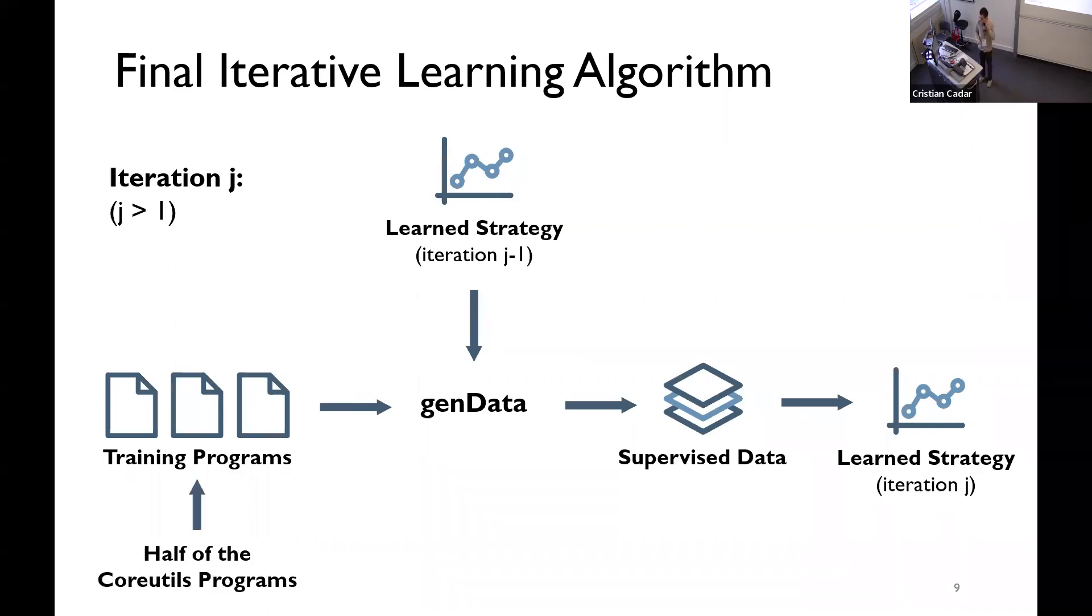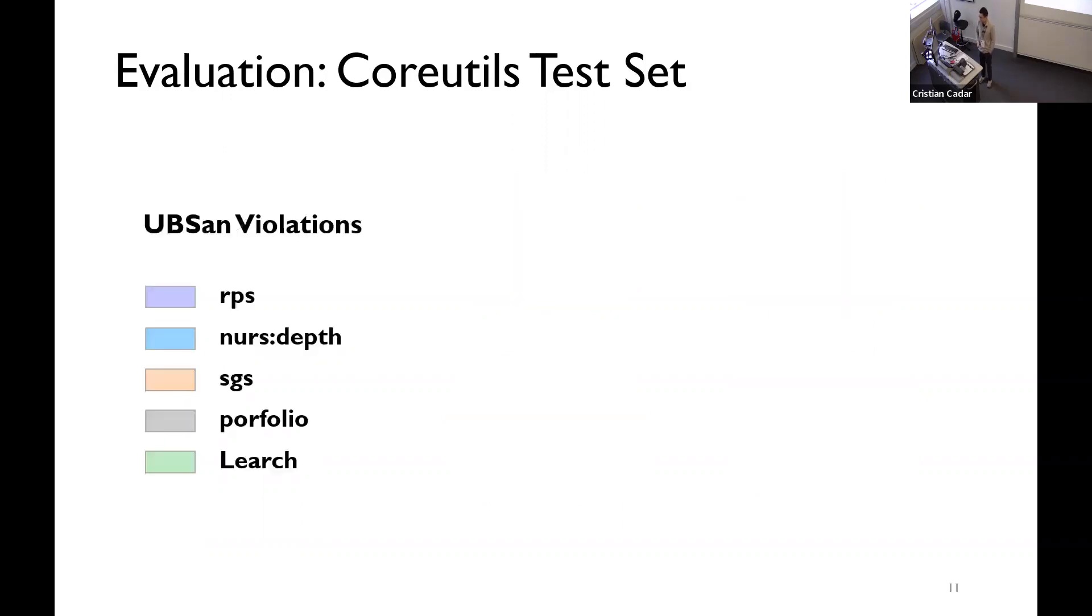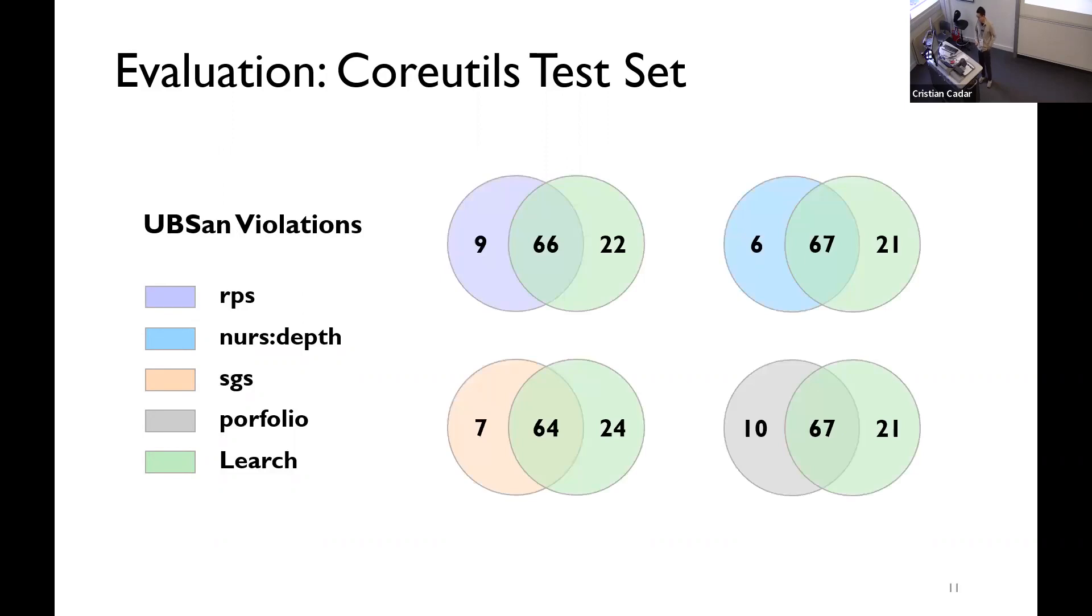We train, our training programs are half of the COREUTILS programs. Now comes to the evaluation. The first evaluation is done on the other half of the COREUTILS programs. The time limit is, as usual, one hour. As baseline, we have some existing heuristics that are already in the tree. And, the portfolio here is a combination of the best performing strategies, the heuristics. What we have is that, for line coverage, NERJ achieves more than its baseline. We also check the undefined behavior sanitizer violations on these strategies. Also, NERJ finds more undefined behaviors on these COREUTILS programs.